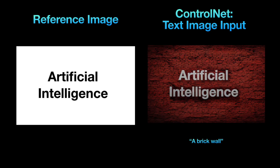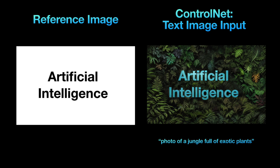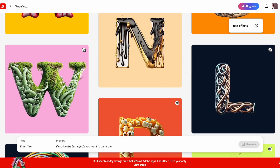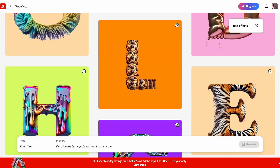This ControlNet feature works with black text on a white background to influence image generation, letting you create stylish text art. Here's an image I generated with the phrase 'Artificial Intelligence' using the prompt 'Brick Wall.' The strength setting is crucial here — anything below 1.5 doesn't render the text properly or it may have errors. Here's another one with a jungle theme. However, it's worth noting that I couldn't fully integrate the text into the images — in this regard, Leonardo falls short compared to tools like Adobe Firefly.